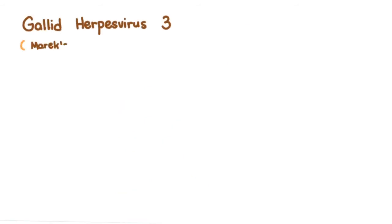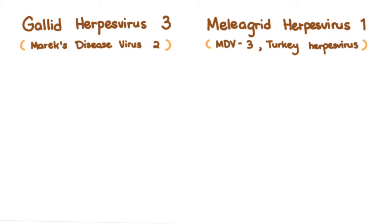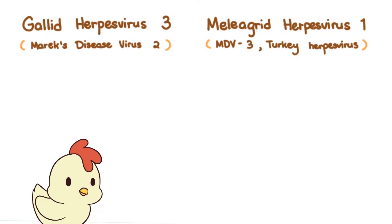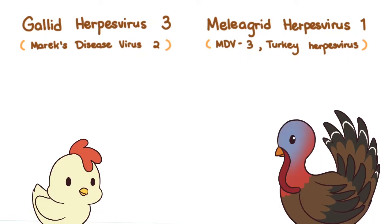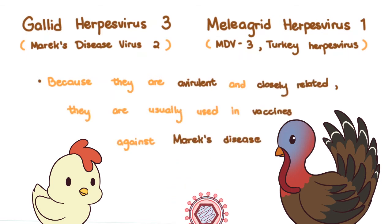Avirulent strains fall under Gallid herpesvirus 3 (Marek's disease virus 2) and Meliagrid herpesvirus 1 — or turkey herpesvirus, or Marek's disease virus 3 — for chickens and turkeys respectively. Because they are avirulent and closely related, they are usually used in vaccines against Marek's disease.